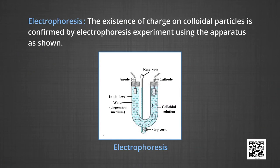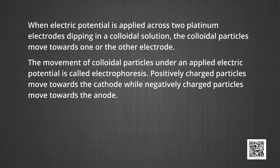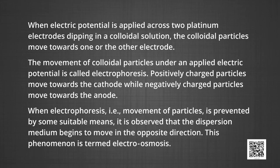Number three, electrophoresis. The existence of charge on colloidal particles is confirmed by electrophoresis. When electric potential is applied across two platinum electrodes dipping in a colloidal solution, the colloidal particles move towards one or the other electrode. The movement of colloidal particles under an applied electric potential is called electrophoresis. Positively charged particles move towards the cathode, while negatively charged particles move towards the anode. When electrophoresis — that is, the movement of particles — is prevented by some suitable means, the dispersion medium begins to move in the opposite direction. This phenomenon is termed electroosmosis.